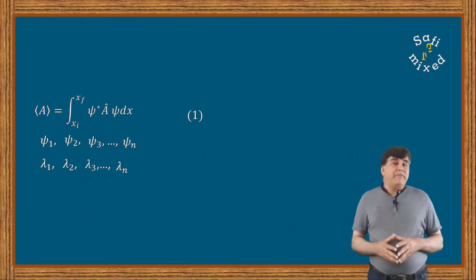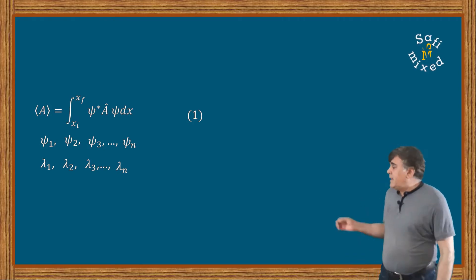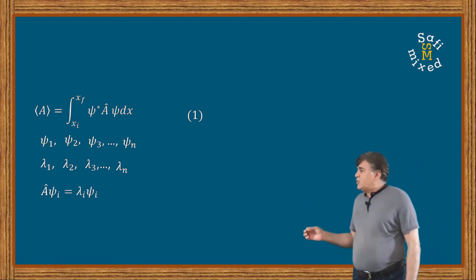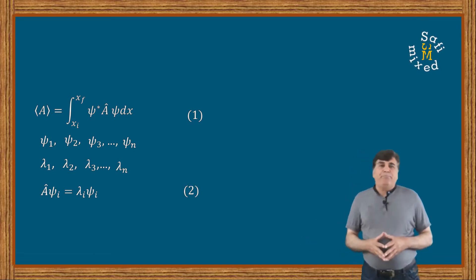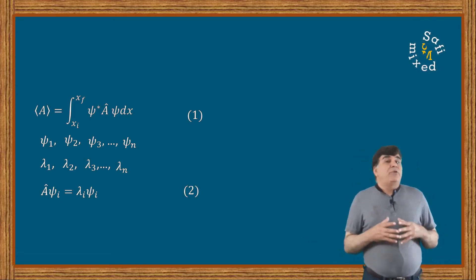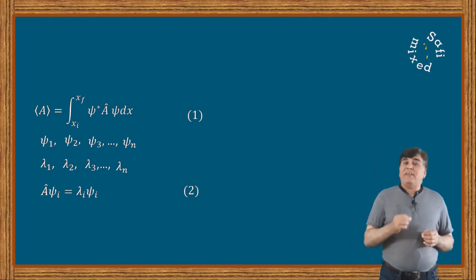Then from the eigenvalue equation we can write A ψᵢ equals λᵢ ψᵢ. Now with this information in hand, the function ψ of equation 1 can be expressed as a linear combination of the eigenfunctions of operator A.